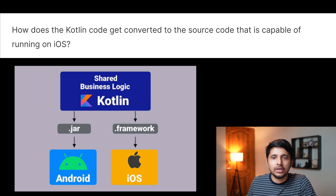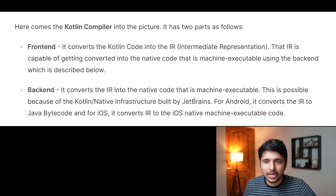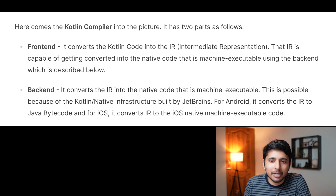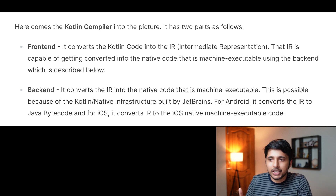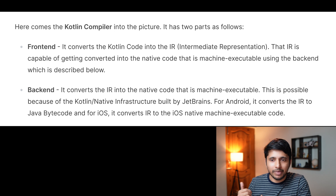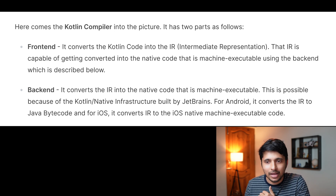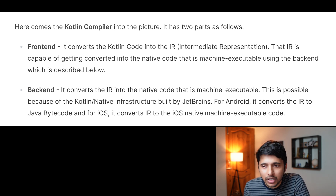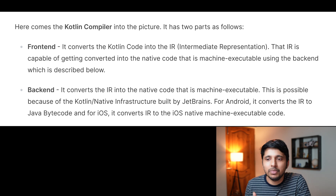The next question is: how does the Kotlin code get converted to native code capable of running on iOS? Here comes the compiler into the picture. It has two parts: the frontend and the backend. The frontend converts the Kotlin code into IR — Intermediate Representation. Then that IR is converted into native machine-executable code using the backend, which is made possible by the Kotlin Native infrastructure built by JetBrains.